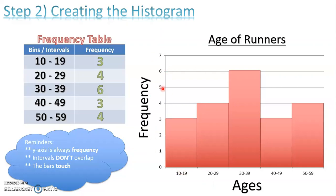And this y-axis is always going to be frequency. It can be labeled as number of runners or something like that, but it's always going to be looked at as frequency.